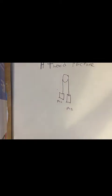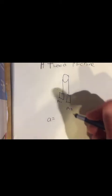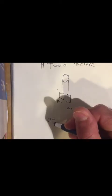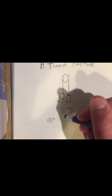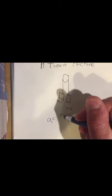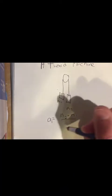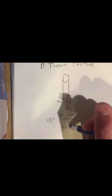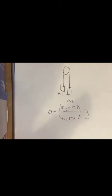And what we came up with, and hopefully you can follow the logic and rationale for how we came up with this, but what we came up with was that the acceleration of mass 1 is m2 minus m1 divided by m2 plus m1 times g. So that's the Atwood machine equation.